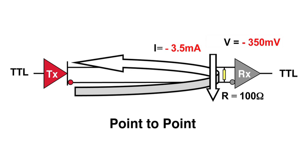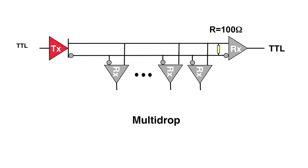The termination resistor R must be placed as close as possible to the receiving device. For multi-drop applications using LVDS with more than one receiver, you must place the termination at the resistor furthest from the driver. It's critical that a single termination resistor is used. Additionally, the standard demands a value of 100 ohms to match the impedance of the transmission line media. The matching resistance is used to minimise line reflections.